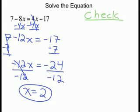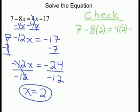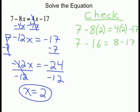Now we check our solution by substituting 2 into the original equation. We have 7 minus 8 times 2 equals 4 times 2 minus 17. 8 times 2 is 16, and 4 times 2 is 8. So 7 minus 16 equals negative 9, and 8 minus 17 equals negative 9. Negative 9 equals negative 9, so 2 is a solution.